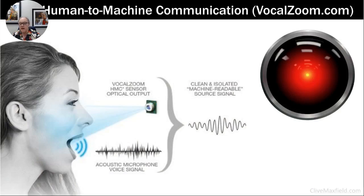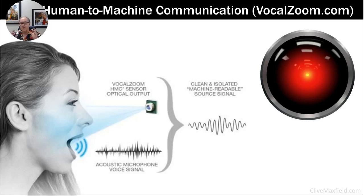VocalZoom makes industrial communication systems. Like HAL lip-reading astronauts in 2001: A Space Odyssey, this technology shines a laser onto a person's face in a very noisy factory environment and detects tiny fluctuations in the cheek and nostrils as they speak. It uses that additional information to filter the speech out from the surrounding noise, so someone listening with headphones would hear a perfectly clear voice with no background noise at all.